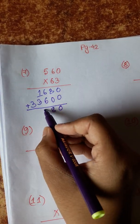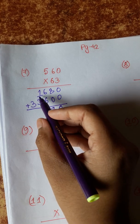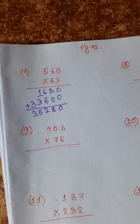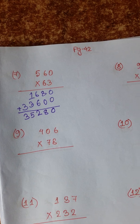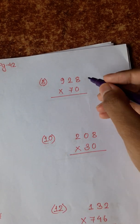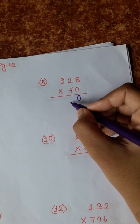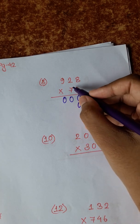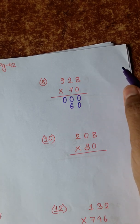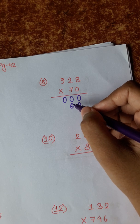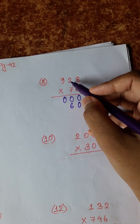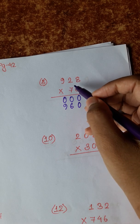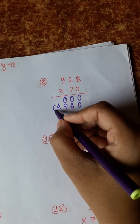6 plus 6 is 12, 2 is 1, 1 plus 1 is 2, 3 plus 2 is 5. 8 0s are 0, 2 0s are 0, 9 0s are 0. 7 8s are 56, 6. 5, 7 2s are 14 plus 5 is 19, 1, 7 9s are 63 plus 1 is 64.